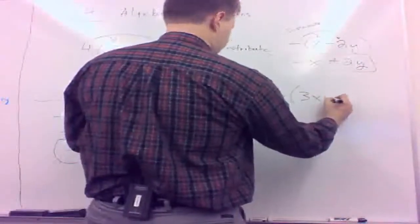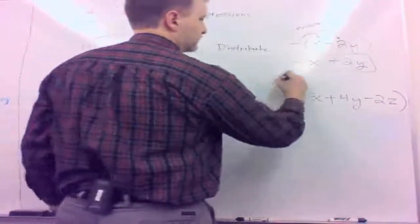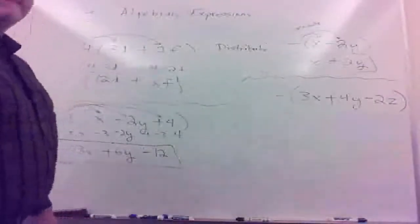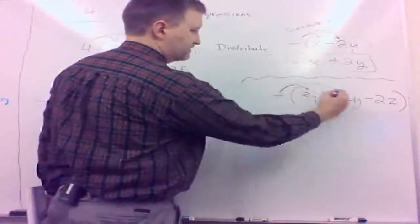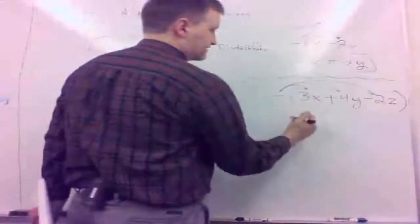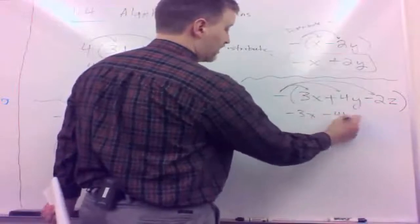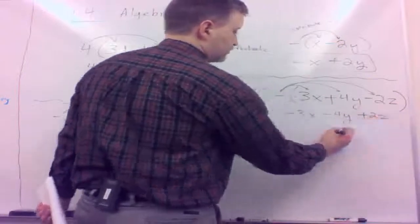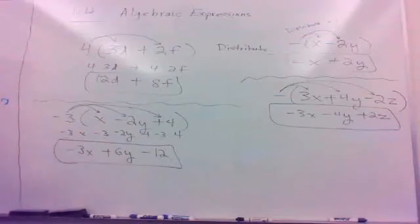Another quick example: minus (3x plus 4y minus 2z). The minus in front of the parentheses must be distributed throughout. Negative times 3x is minus 3x. Negative times 4y is minus 4y. And then negative times minus 2z — minus 1 times minus 2z — is plus 2z. So it distributes to all of the terms on the inside.